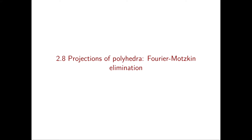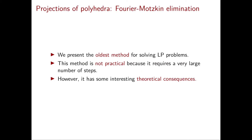In this video we're going to discuss projections of polyhedra and we will introduce a method to compute them which is called the Fourier-Motzkin elimination. Fourier-Motzkin elimination can be seen as the oldest method for solving linear programming problems. However, such method while it gives you an algorithm, so it's a finite procedure, it is not practical because it requires a very large number of steps. In particular, this number of steps can grow exponentially with the dimension. In any case, we're interested in the Fourier-Motzkin elimination mainly because of its theoretical consequences.